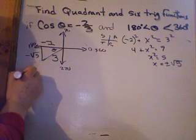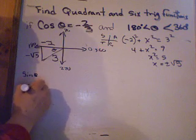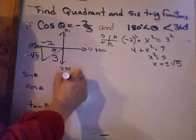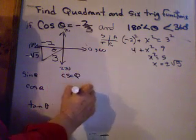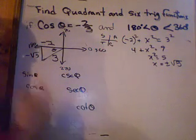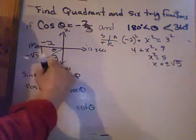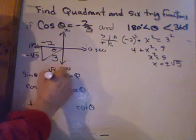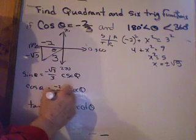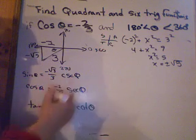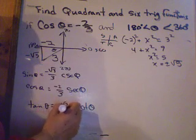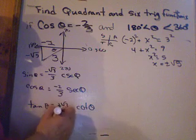Now I have the sides. Now I can find the six trig functions. Sine of theta, cosine of theta, tangent of theta, cosecant of theta, secant of theta, cotangent of theta. What's the sine of theta? There's the theta. Opposite over hypotenuse. Negative root three over three. What's the cosine of theta? Negative two over three. What's the tangent of theta? Negative root three over negative two.